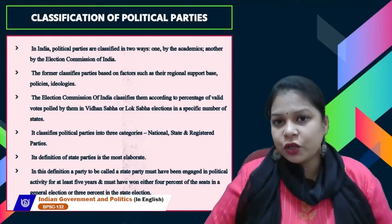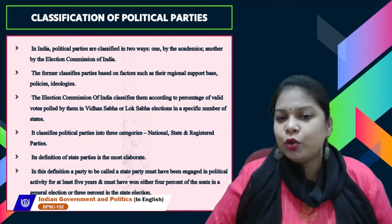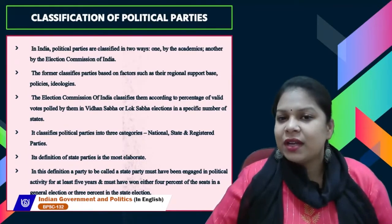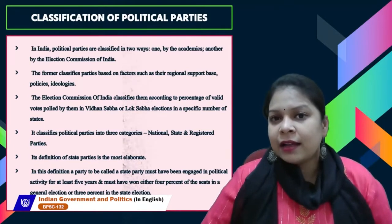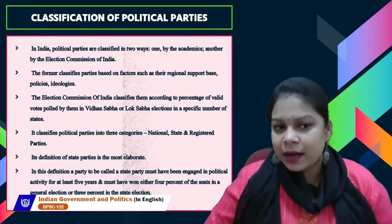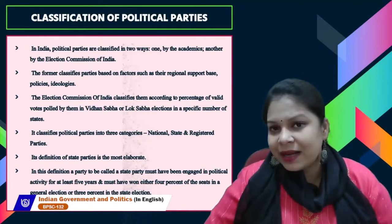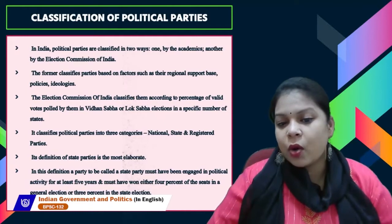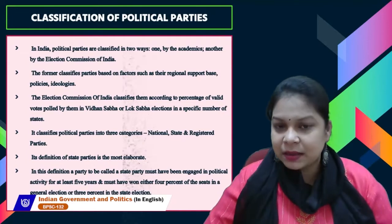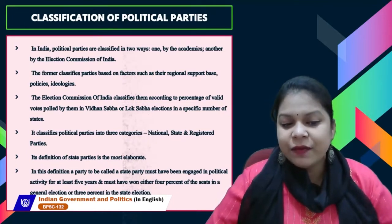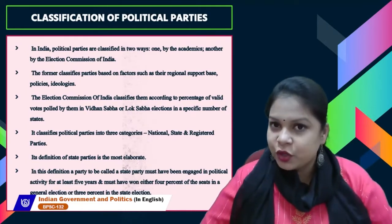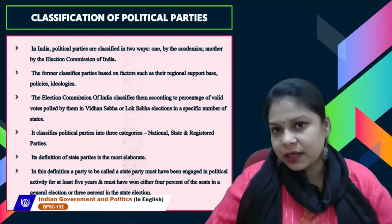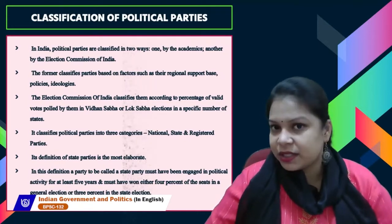Classification of political parties in India: parties are classified in two ways — by academicians, and by the Election Commission of India. Academicians classify parties based on factors such as regional support base, policies, and ideologies. The Election Commission classifies them according to the percentage of valid votes polled in Vidhan Sabha or Lok Sabha elections in a specific number of states, into three categories: national parties, state parties, and registered parties.